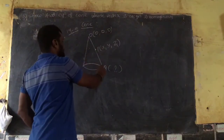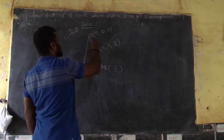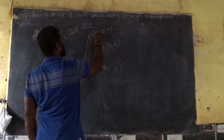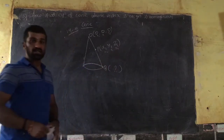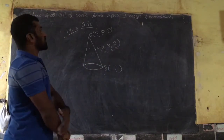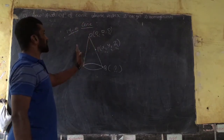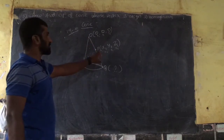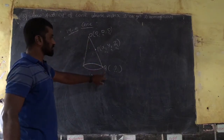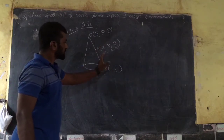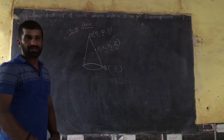The origin is the first point and P(x₁, y₁, z₁) is the second point on the surface. The equation of the cone whose vertex is the origin passes through the coordinate point P(x₁, y₁, z₁), and the lines on the surface intersect at point Q. This shows that the equation is a homogeneous equation.